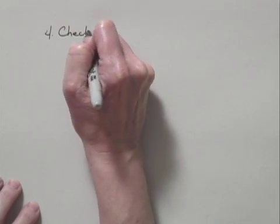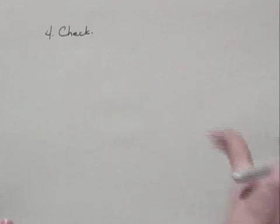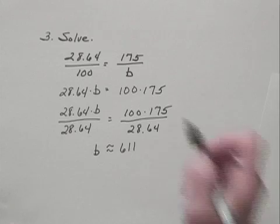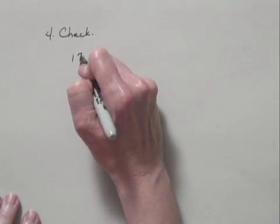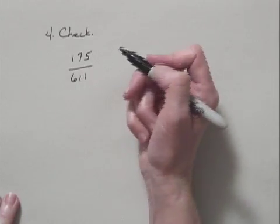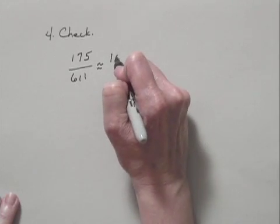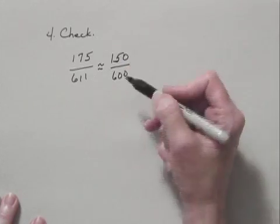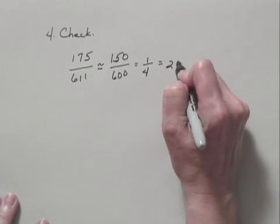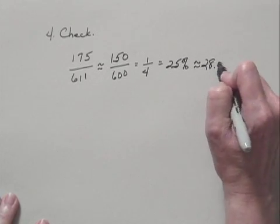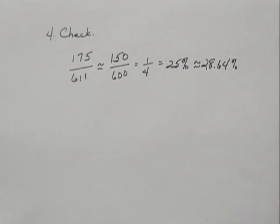Now let's check this to see if we actually have a solution. One thing we can do is repeat the calculations to verify the arithmetic, or we could round and estimate. We had the proportion with the ratio 175 to B, so with our value for B, this is 175 to 611. This is approximately equal to 150 over 600, which equals 1 over 4, or 25%. That's approximately equal to the 28.64% we were working with in the problem, so we have a feeling this is indeed a good answer, and we can go ahead and state the result.